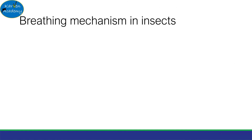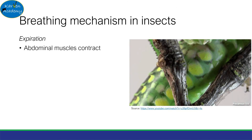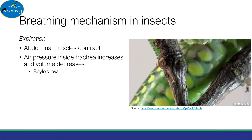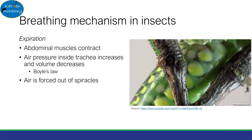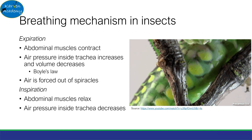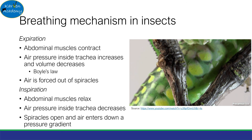The mechanism of breathing in insects is as follows. During expiration, the insect's abdominal muscles contract. This increases the air pressure inside the trachea and decreases its volume. This is known as Boyle's law, which states that volume and pressure are inversely proportional. Hence, air is forced out of the spiracles down a pressure gradient. During inspiration, abdominal muscles relax, so air pressure inside the trachea decreases. Hence, the spiracles open and air enters down a pressure gradient.